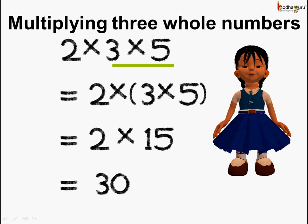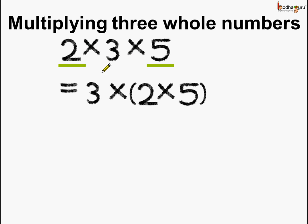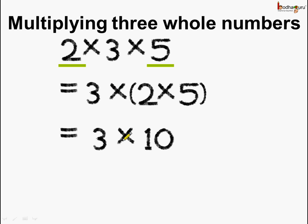There is one more way to multiply these 3 numbers. First we will multiply 2 and 5, then we will multiply by 3. So this becomes 3 × (2 × 5). We do this operation first: 2 × 5 is equal to 10, and then we do 3 × 10, so the answer becomes 30.